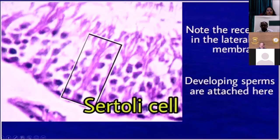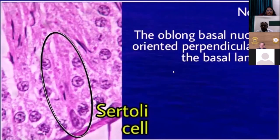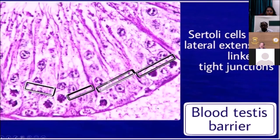There are plenty of Sertoli cells — if you have a good slide, virtually every seminiferous tubule can show about 10 to 15 Sertoli cells. You must also remember that adjacent Sertoli cells are plastered to each other by tight junctions, and that is supposed to be the blood-testis barrier.